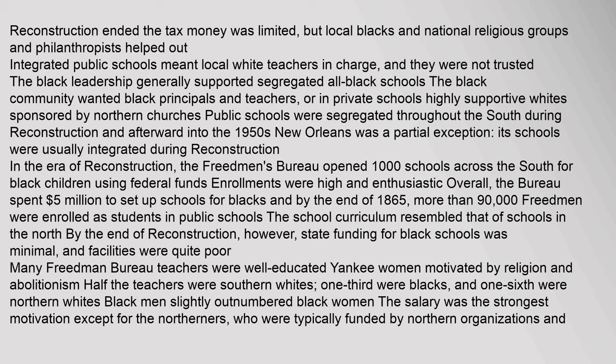The Freedmen's Bureau opened 1,000 schools across the South for black children using federal funds. Enrollments were high and enthusiastic; overall the Bureau spent $5 million to set up schools for blacks, and by the end of 1865 more than 90,000 Freedmen were enrolled in public schools. By the end of Reconstruction, however, state funding for black schools was minimal and facilities were quite poor. Many Freedmen's Bureau teachers were well-educated Yankee women motivated by religion and abolitionism. Half the teachers were Southern whites, one third were blacks, and one sixth were Northern whites.